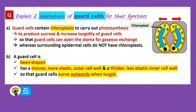In summary, there are three adaptations of guard cells: they contain chloroplasts; they are bean-shaped; and they have a thinner, more elastic outer cell wall compared to the inner cell wall, which is thicker and less elastic.